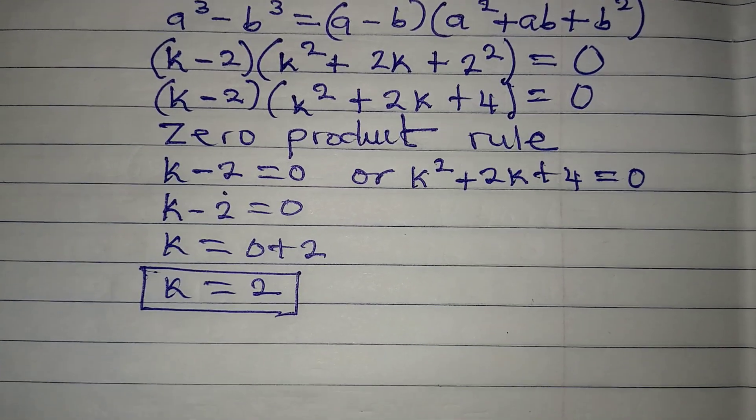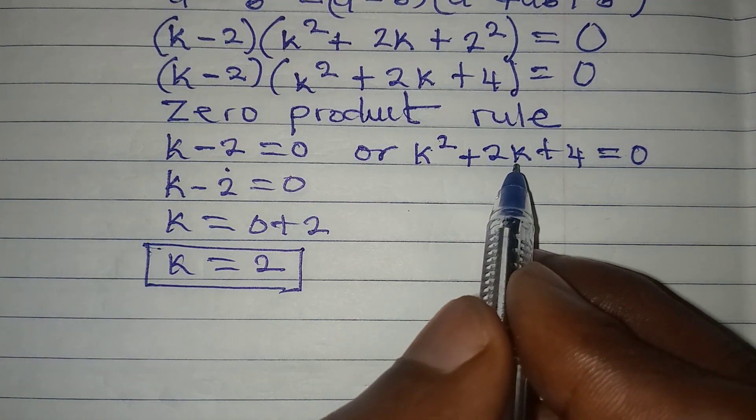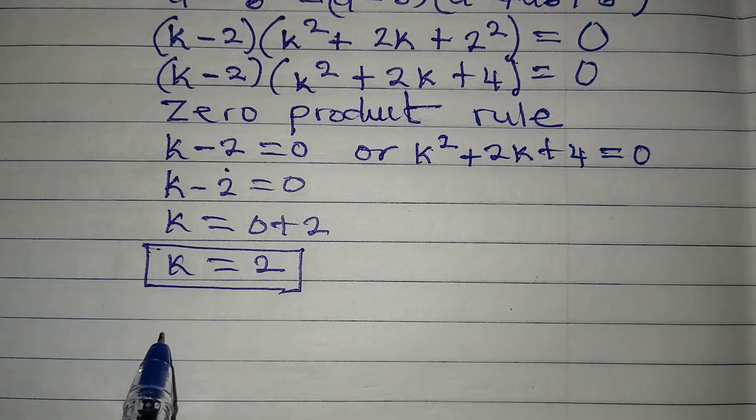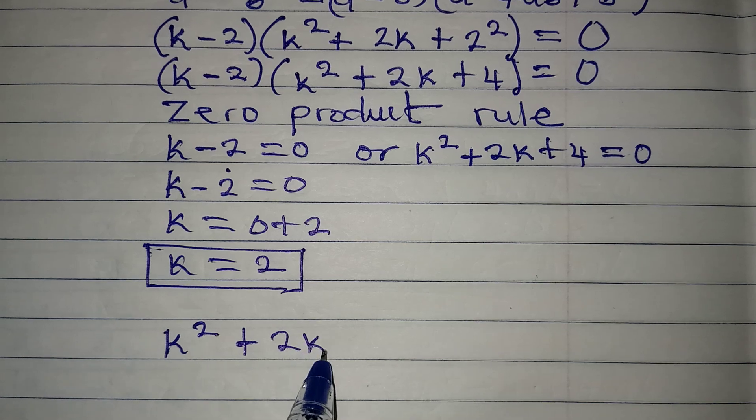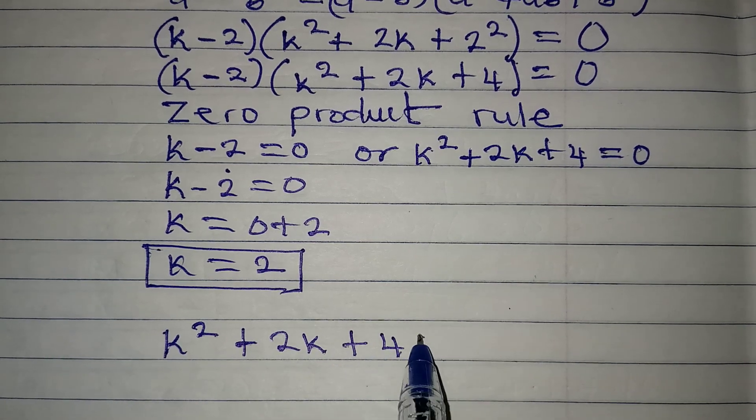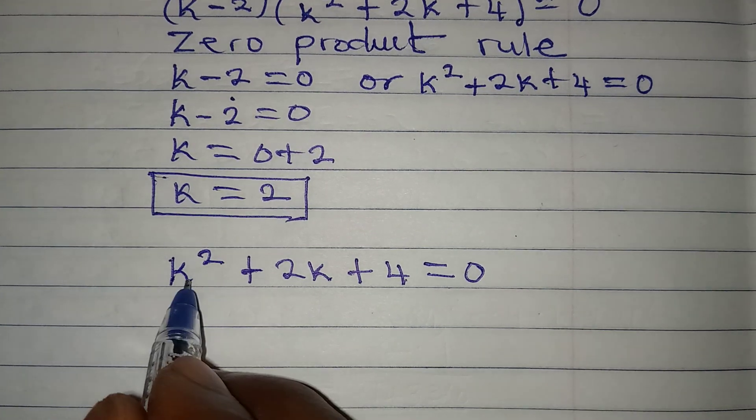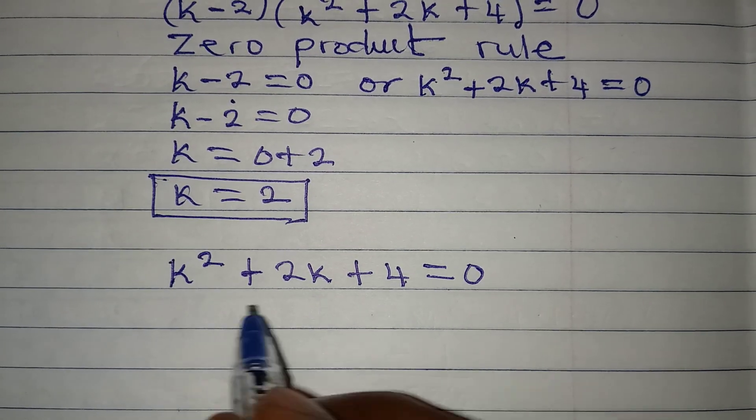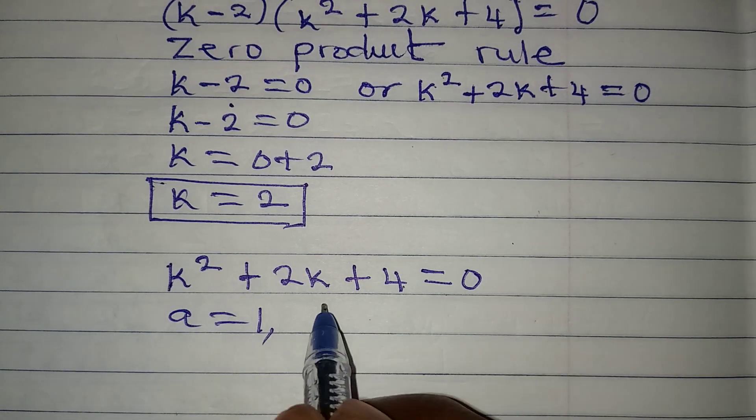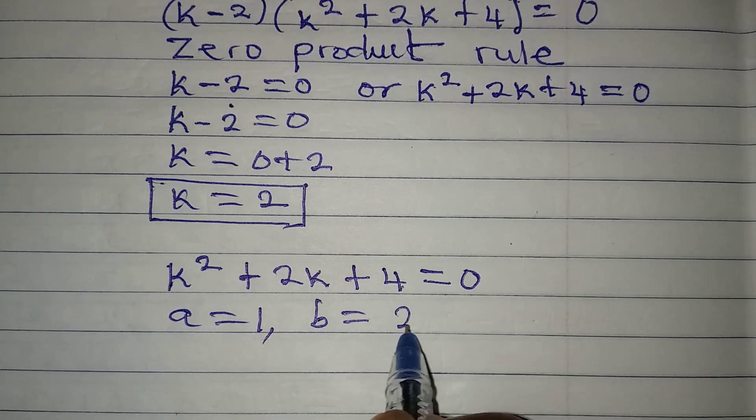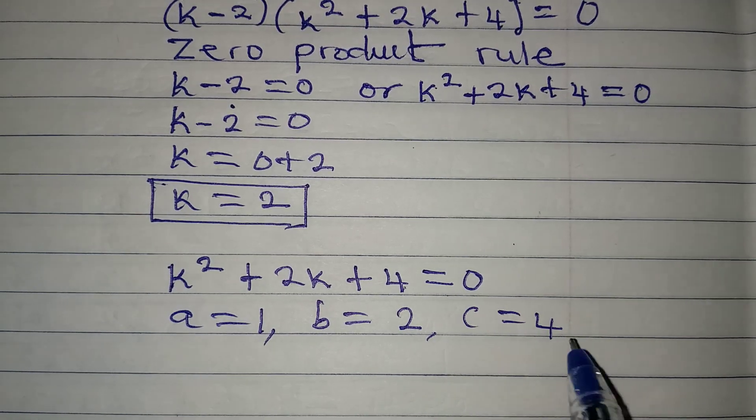Now, to get the other values of k, we will go straight to the quadratic equation there, where we have k² + 2k + 4 being equal to 0. From here now, let's solve this using the formula method. A is 1, coefficient of k². B is 2, coefficient of k. And then c is equal to 4, the constant.